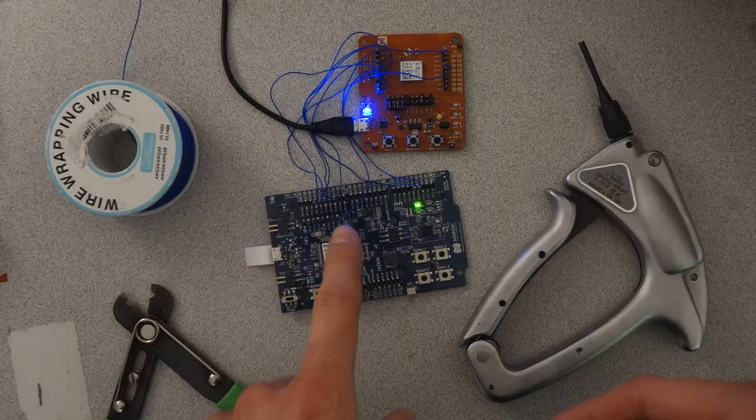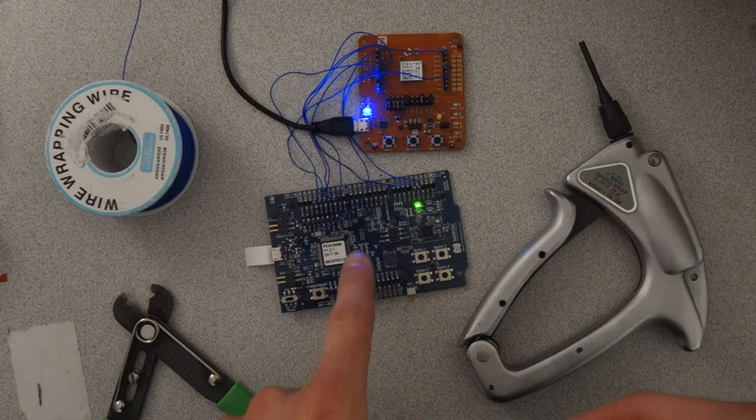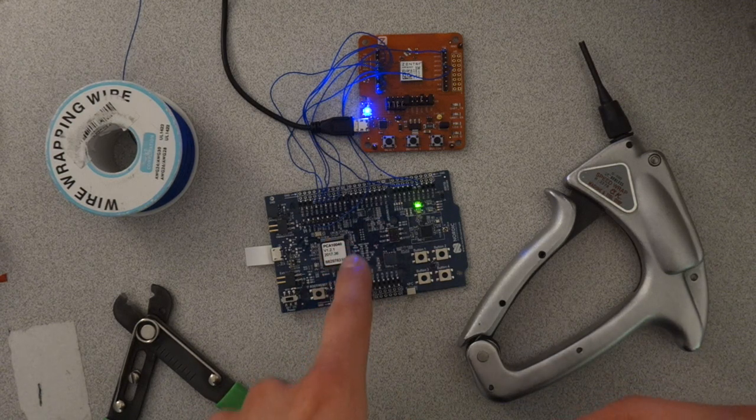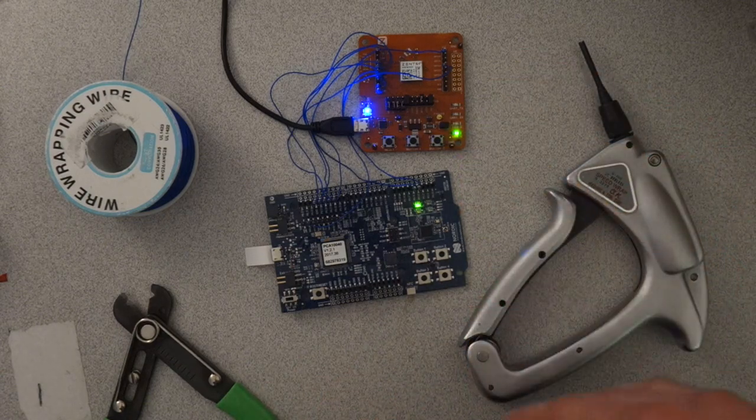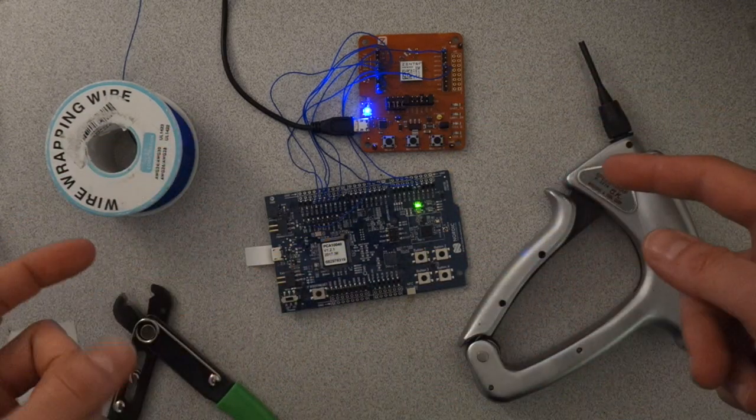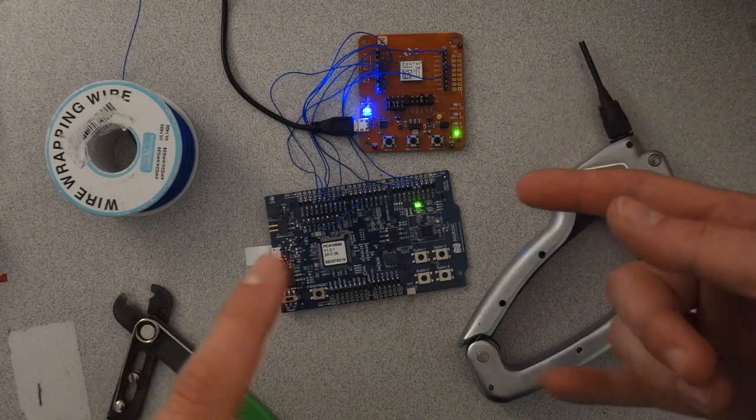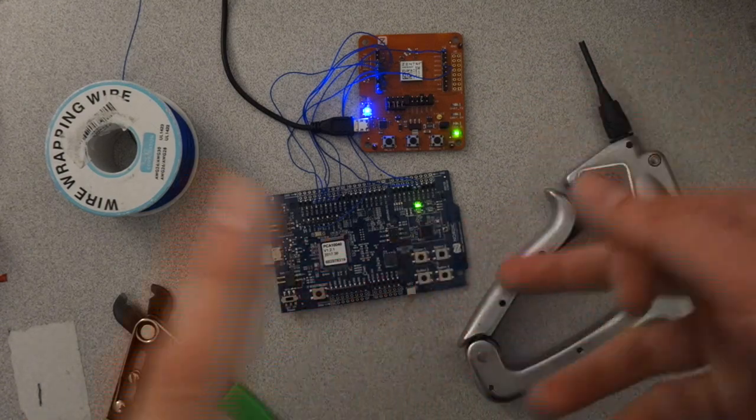It's a Nordic nRF52832 Bluetooth development board coupled with a Silicon Labs AMW007 Wi-Fi development board. As you can see, I've made all the important connections between these two that are necessary for proper communication and power control.